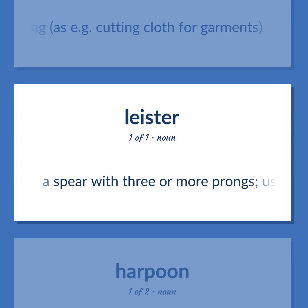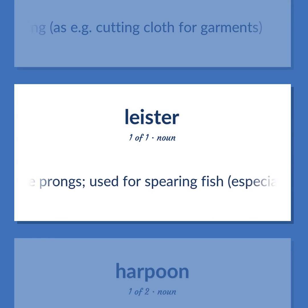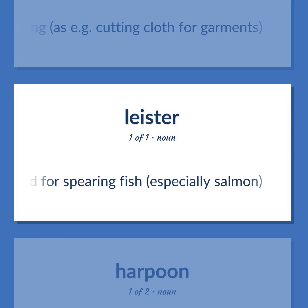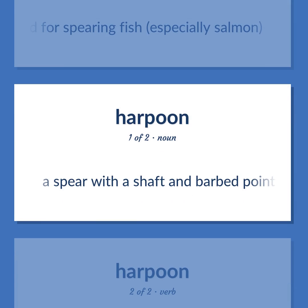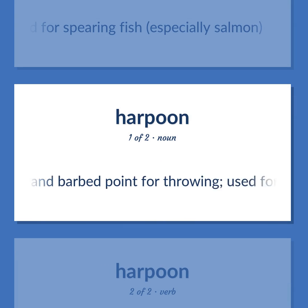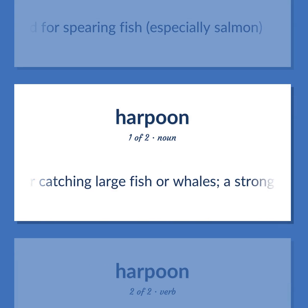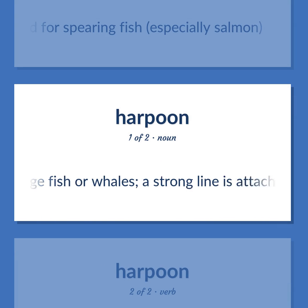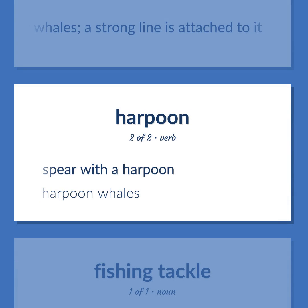Trident: A spear with three or more prongs, used for spearing fish, especially salmon. Harpoon: A spear with a shaft and barbed point for throwing, used for catching large fish or whales, to which a strong line is attached. To spear with a harpoon — harpoon whales.